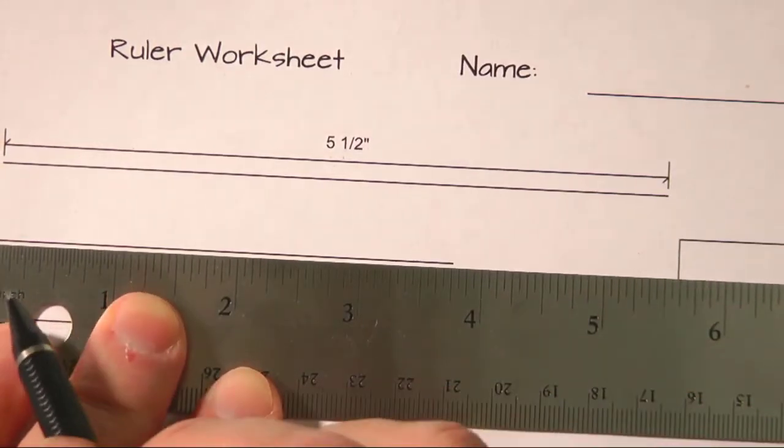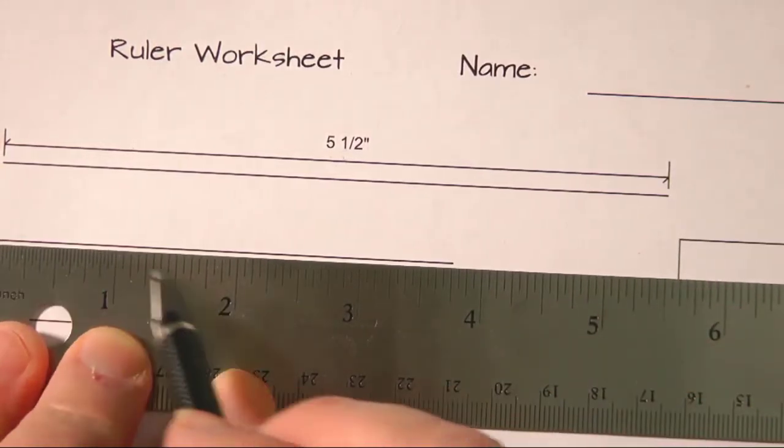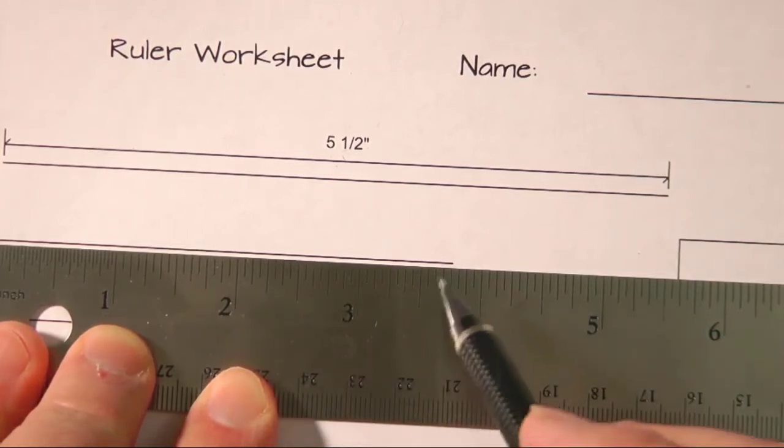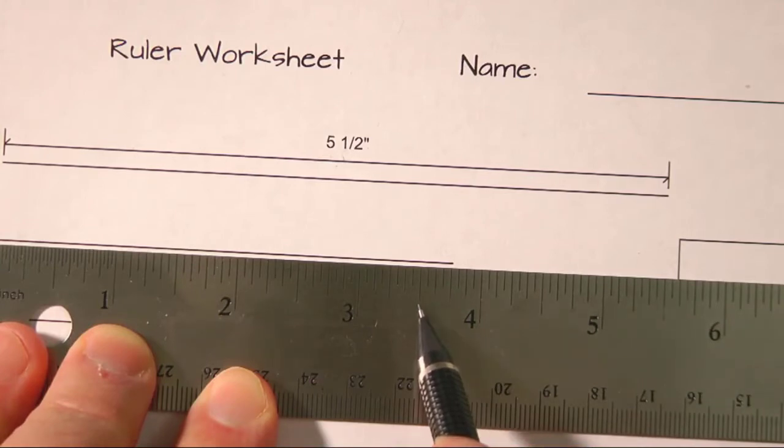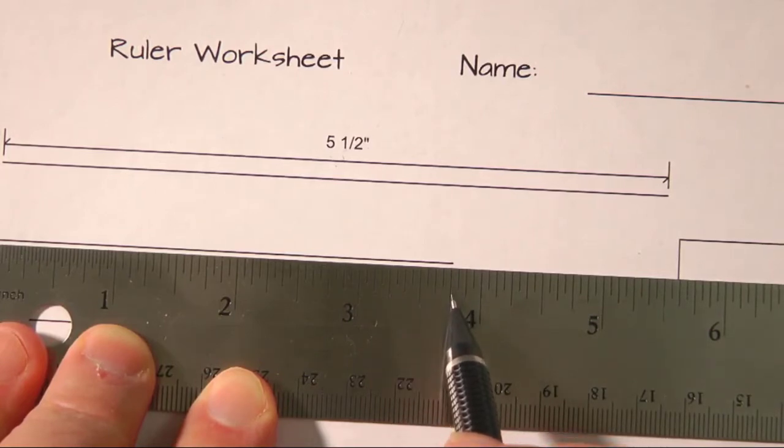So we go from zero, one, two, three, and it ends up in this line here, which is the quarter marks. See, the half inch is the longest between the inches, the quarter marks are the second longest, so that's how I can quickly tell that it's a quarter mark.